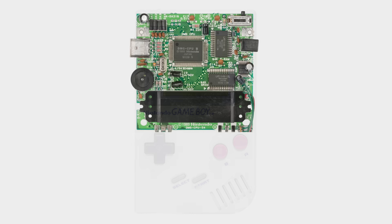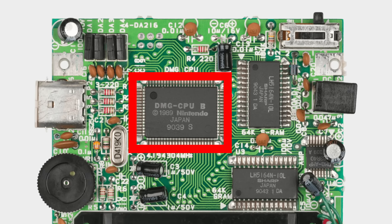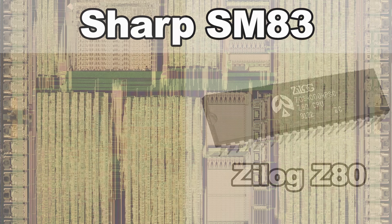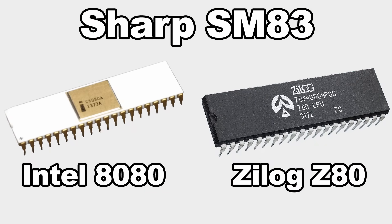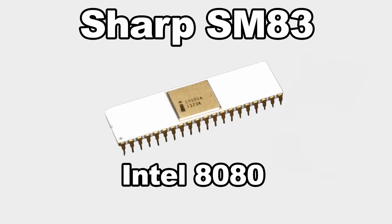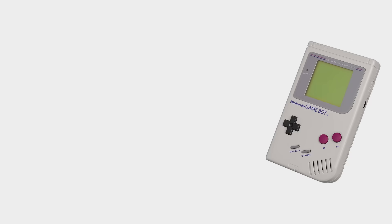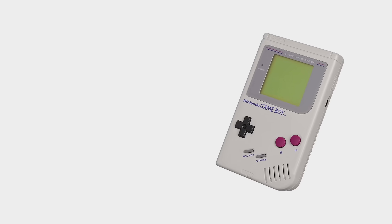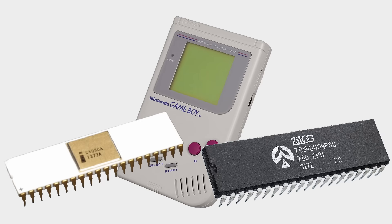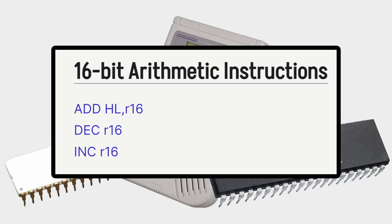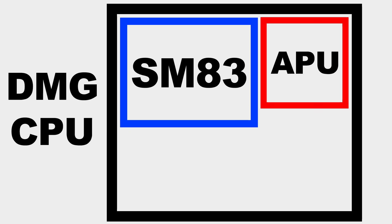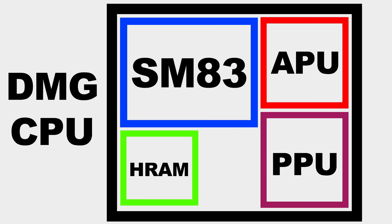The Game Boy runs off a custom system on a chip, referred to as the DMG CPU. At its core, it's a custom 8-bit Sharp SM83, which is a mix between the Zilog Z80 and the Intel 8080, although it should be noted that the Z80 itself is based on the 8080's instruction set architecture. This actually makes the Game Boy more related to something like the IBM PC than the NES. Though the Game Boy's core CPU does lack some of the 8080 and Z80's features, it does support a few 16-bit instructions, and the greater SoC package contains a built-in audio processing unit, picture processing unit, high RAM, and startup ROM.